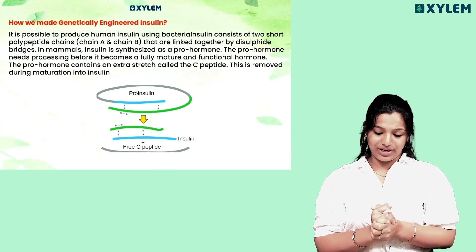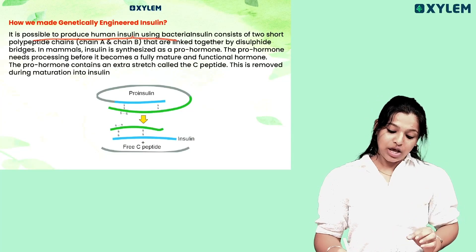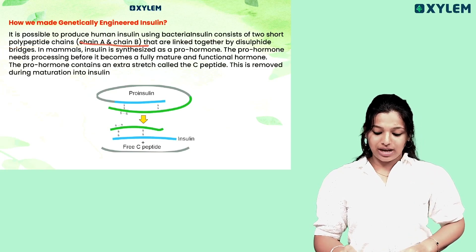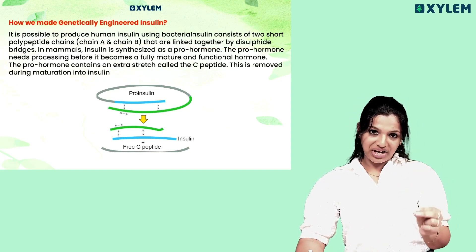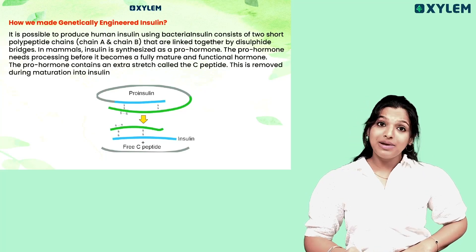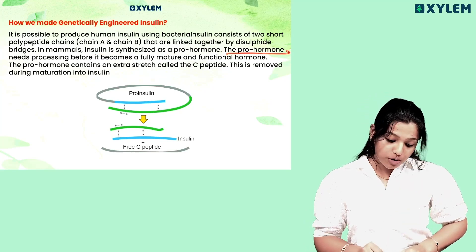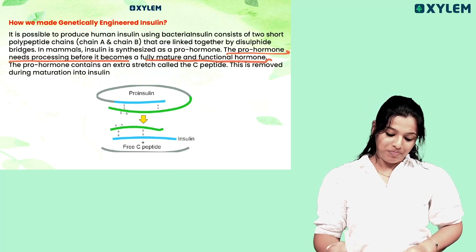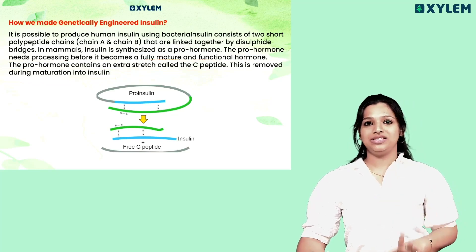How is genetically engineered insulin made? It is possible to produce human insulin using bacteria. Insulin consists of two short polypeptide chains — chain A and chain B — linked together by disulfide bridges. In mammals, insulin is synthesized as a pro-hormone that needs processing before it becomes a fully mature and functional hormone. The pro-hormone contains an extra stretch called C-peptide, which is removed during maturation into insulin.